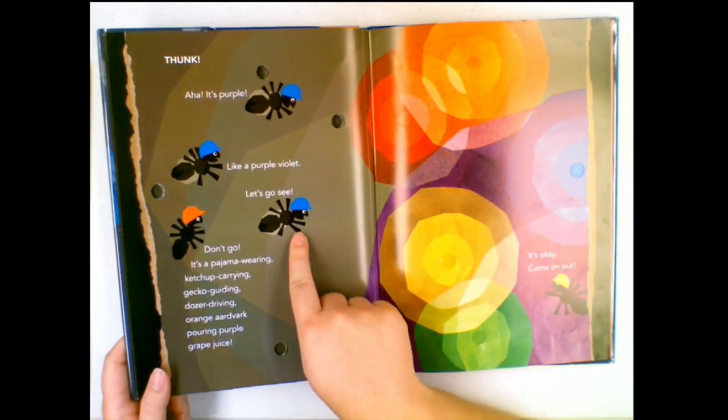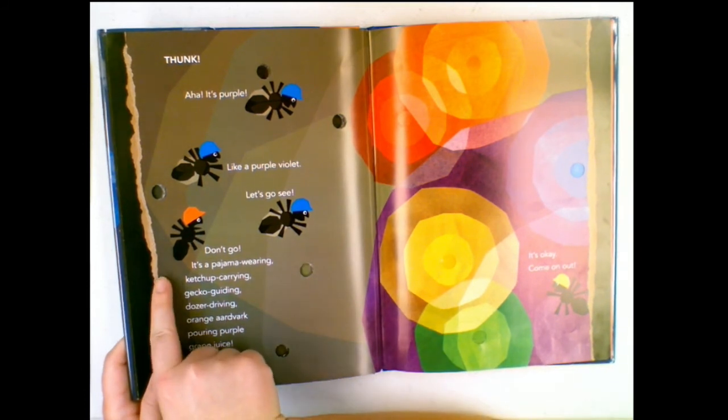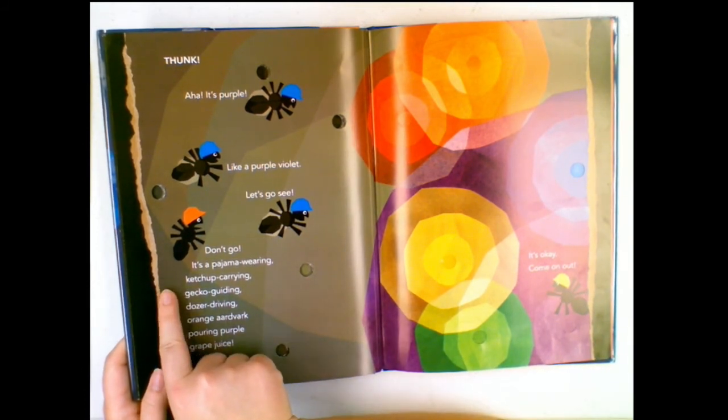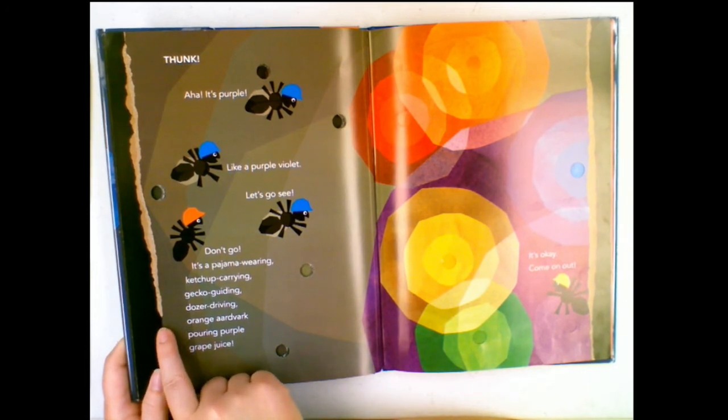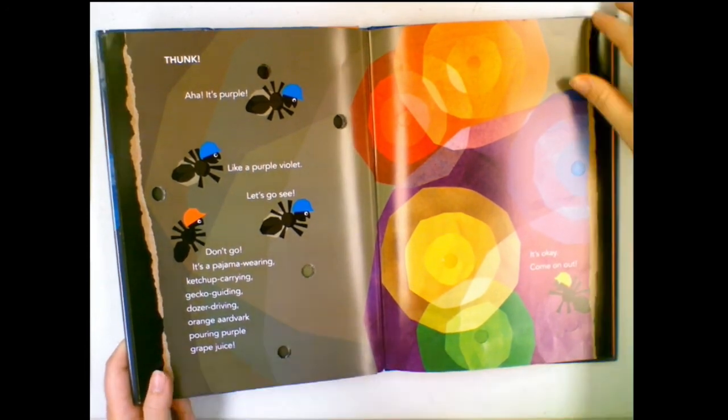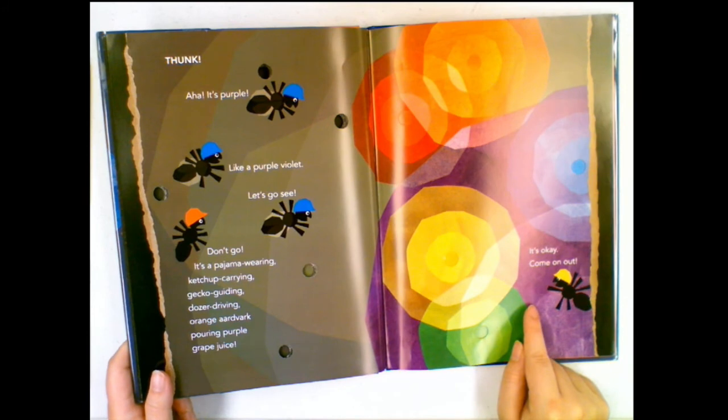Don't go! Don't go! It's a pajama wearing ketchup carrying gecko guiding dozer driving orange Aardvark pouring purple grape juice! It's okay. It's okay. Come on out.